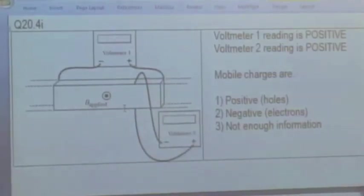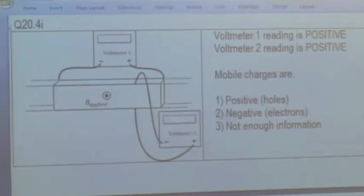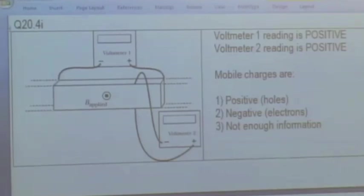Perpendicular to the length of the bar. The magnetic field is pointing outward — there's some applied magnetic field due to coils not shown, pointing outward. Voltmeter 1 has a reading that is positive, and voltmeter 2's reading is also positive. What's the sign of the mobile charge carriers? Think about the steps — see if you can figure out the direction of the electric fields. Try both cases and see which one gives you the correct voltmeter readings.